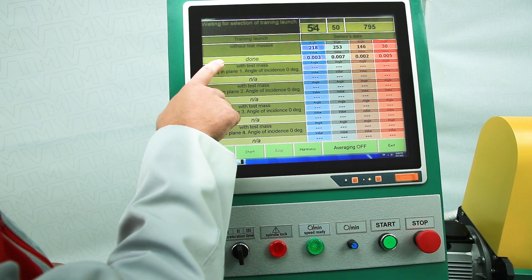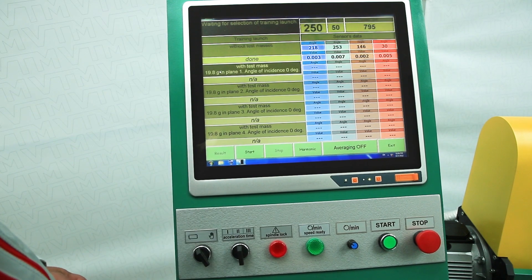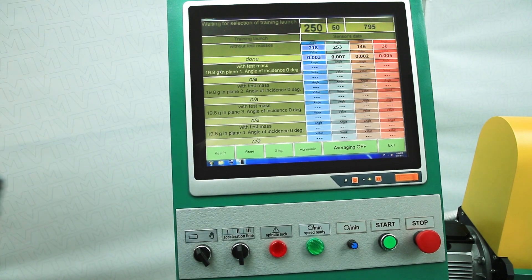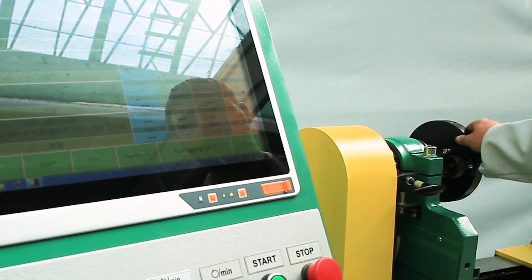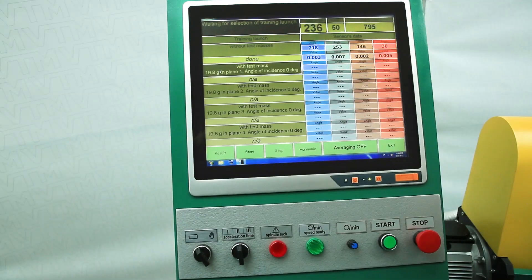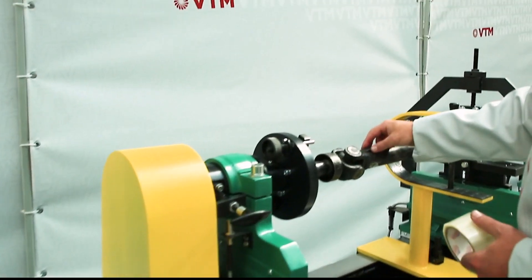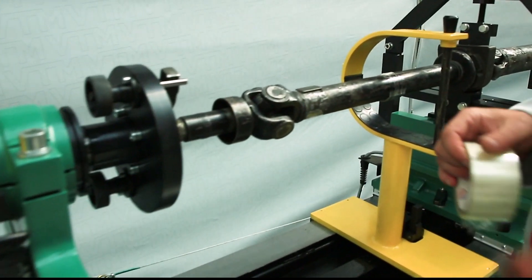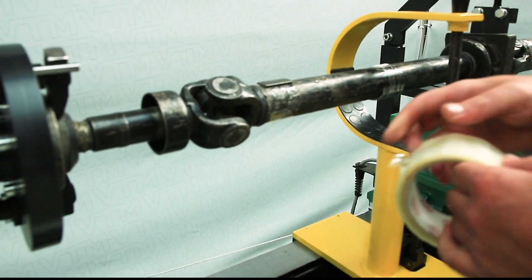Next, select the start with the control load on the first plane. We install this weight and set the rotating gimbal, the angle is zero degrees. Next, we install our control weight vertically on top of the first plane and fix it with adhesive tape.